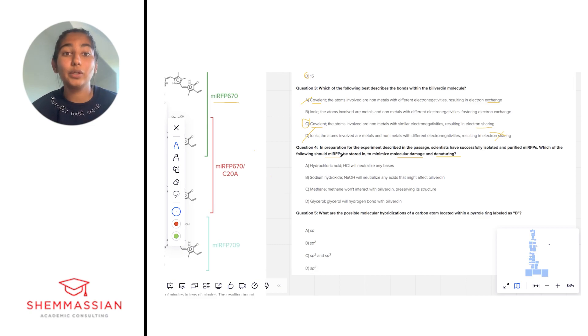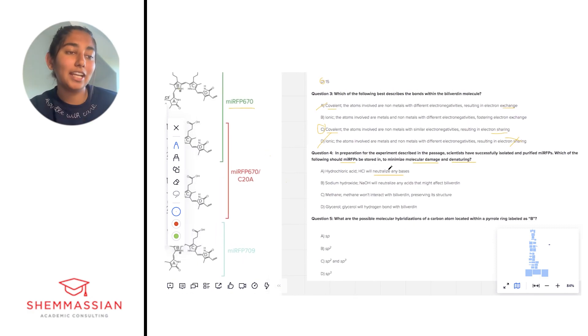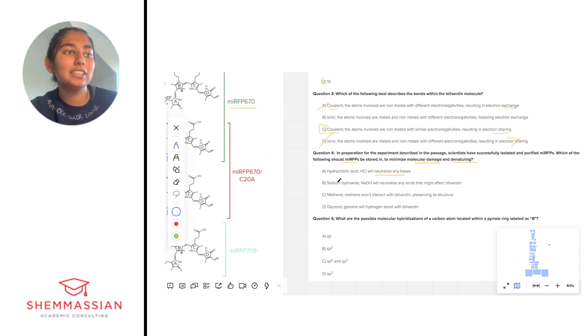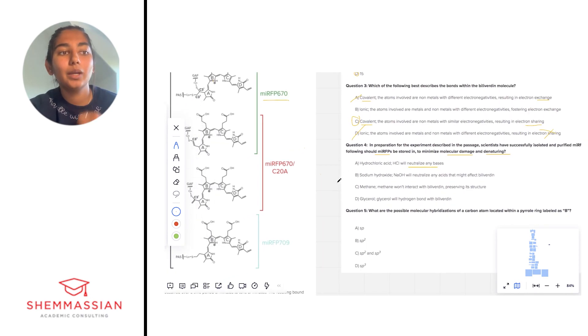For example, if we think about protein denaturing, a big way that we do that is we add HCl to it because HCl is incredibly acidic and it completely messes up the environment and the quaternary structure of a protein. So we want something that's very similar to MIRFP but not really going to damage it too much. Our first choice is HCl that will neutralize any bases. HCl does neutralize bases. However, there aren't really any super basic parts of the BV molecule, and we do know that HCl is a very powerful denaturing agent.